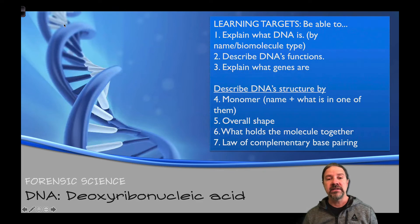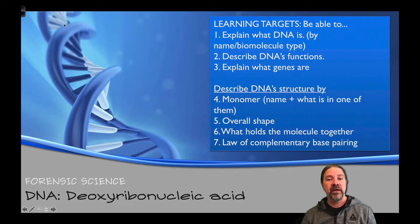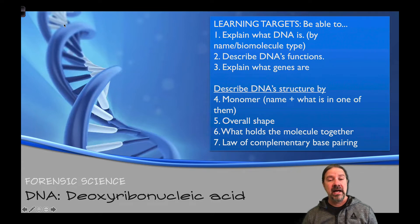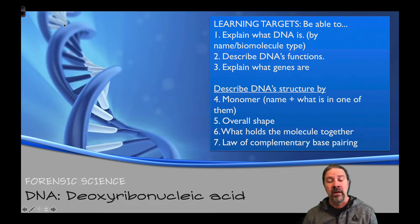Today the learning targets that we want to know and be able to do at the end of the lesson are: number one, explain what DNA is by name and biomolecule type; number two, describe DNA's functions; number three, explain what genes are; and four through seven are under the umbrella of describing DNA's structure — its monomer, the overall shape, what holds the molecule together, and the law of complementary base pairing. We'll continue past this lecture to why it's so useful in forensic science, but first we need to get through the basics.